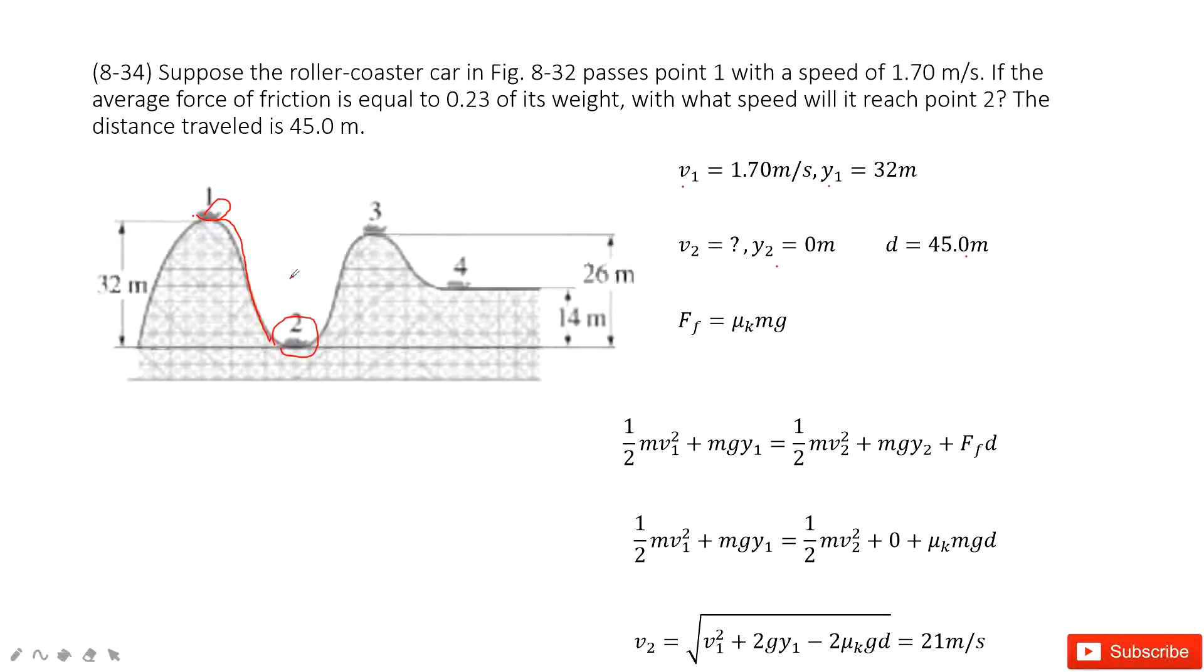We consider the conservation of energy. The initial energy includes the initial kinetic energy plus potential energy. The final energy includes the final kinetic energy, final potential energy, and also the thermal energy. This comes from the work done by the friction.